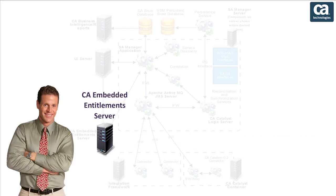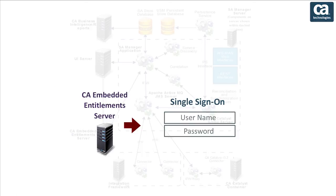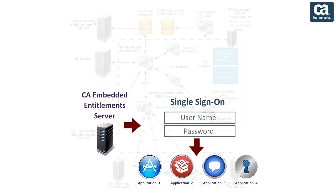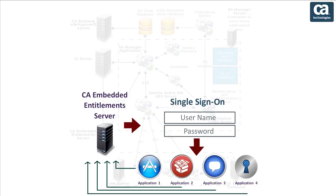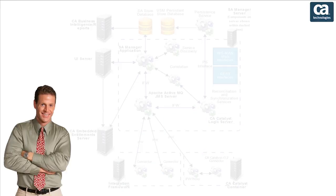Let us move on to the next component: CA Embedded Entitlements Manager, or CAEM. CAEM provides role-based authentication services for the CASOI user interfaces and supports single sign-on across most interfaces. Single Sign-On, or SSO, requires all applications participating in SSO to use the same CAEM server.